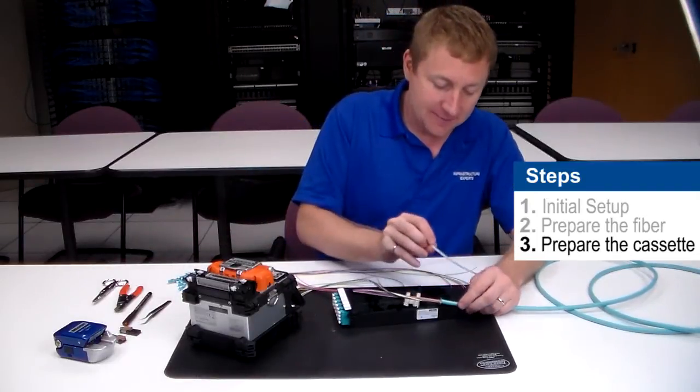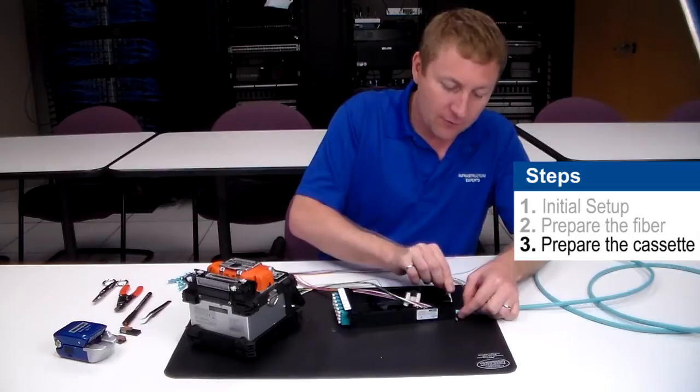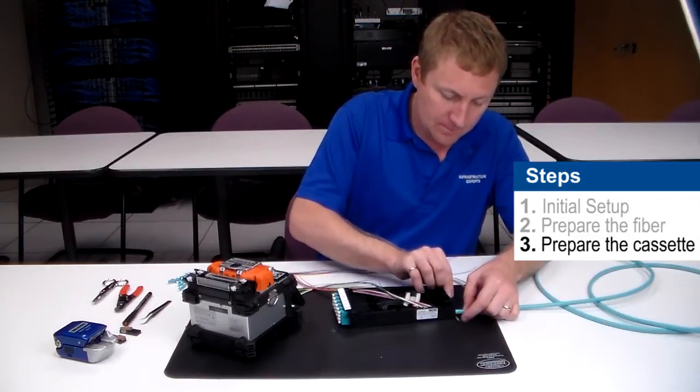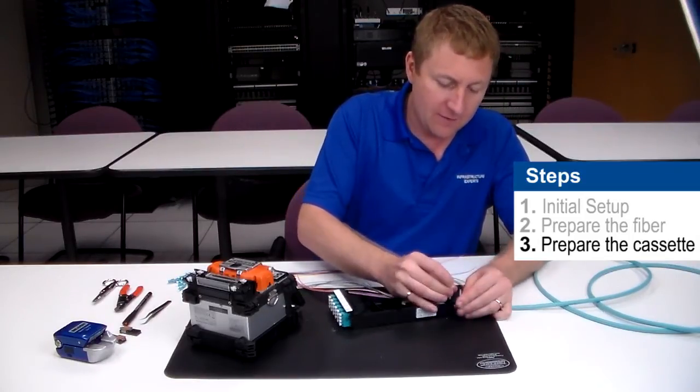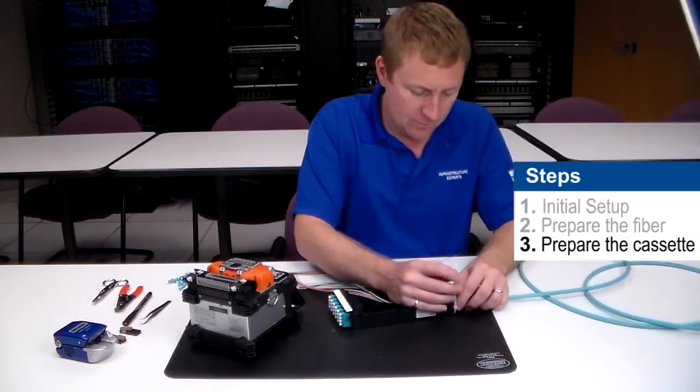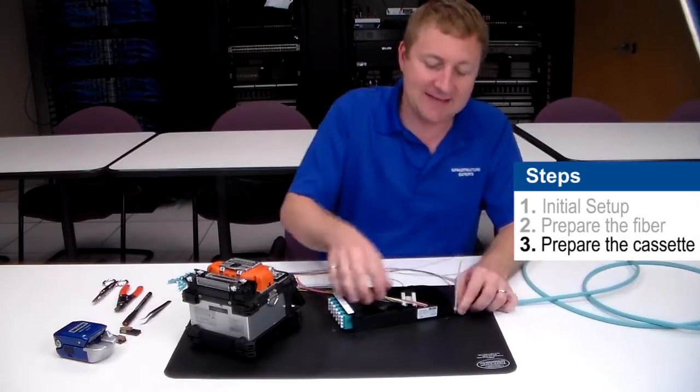So I'm going to use a zip tie. I'm going to feed that through the rear of the cassette and then from there we secure the jacket to the back of the cassette. This is going to keep things nice and stable as we continue to work.